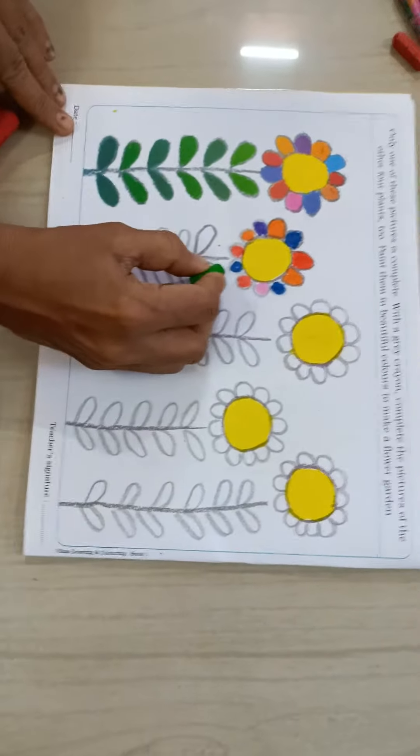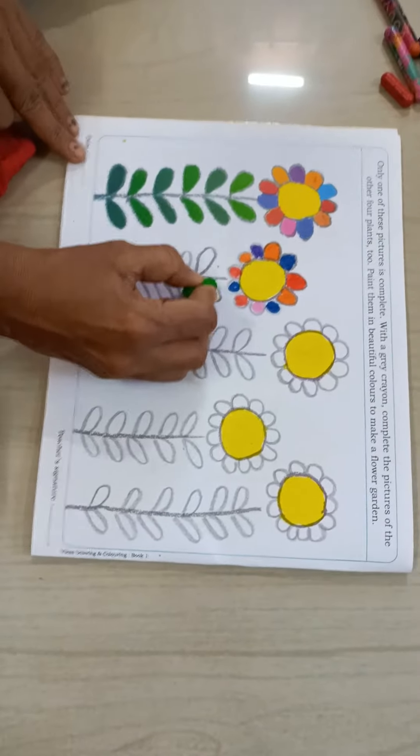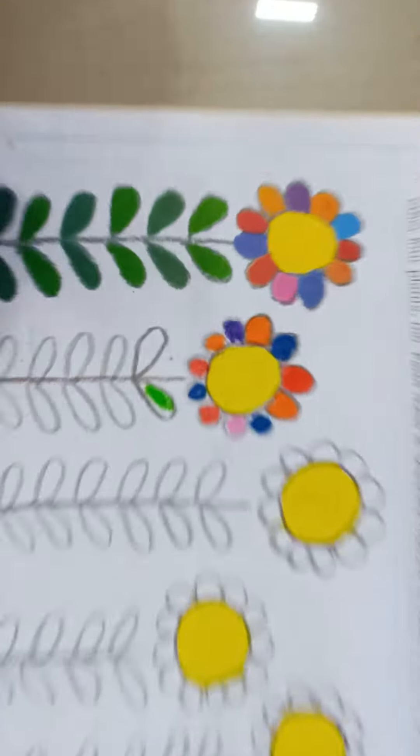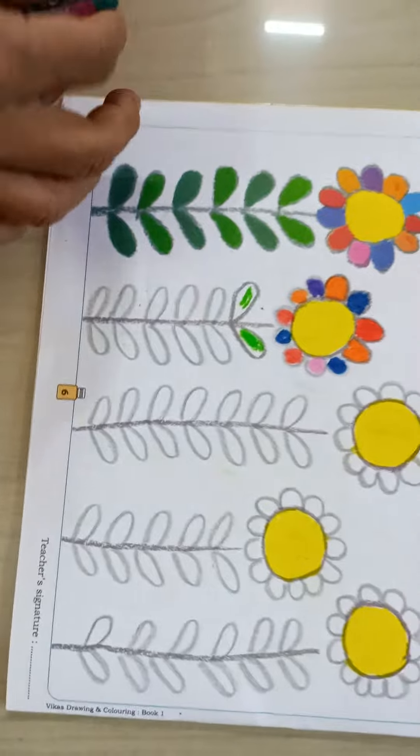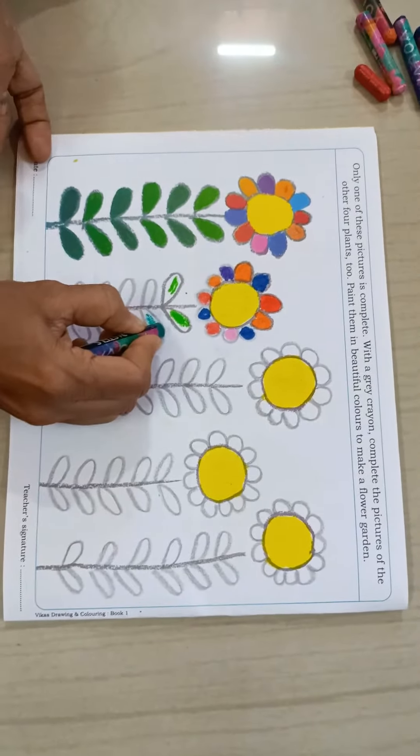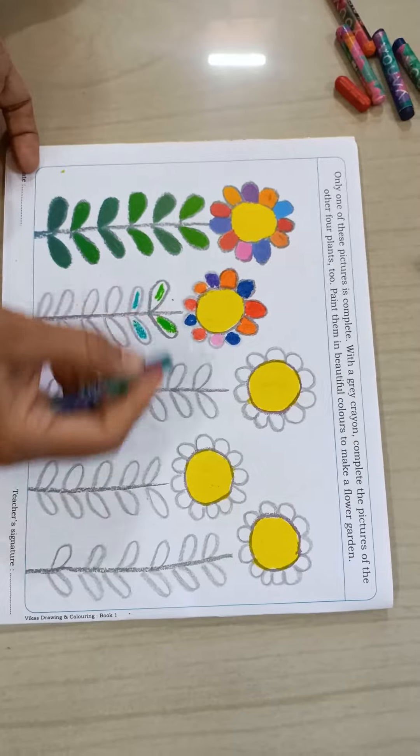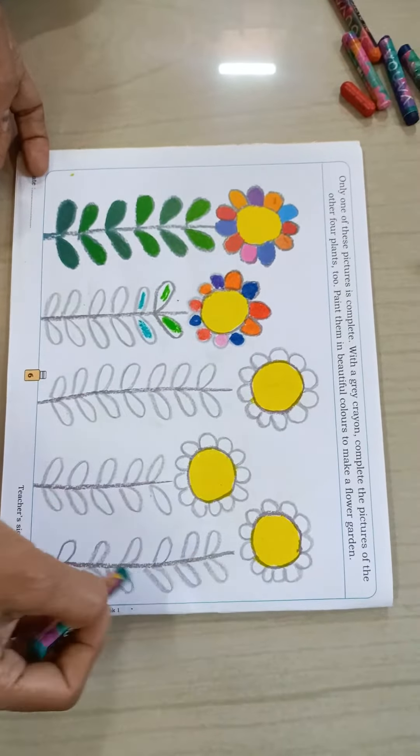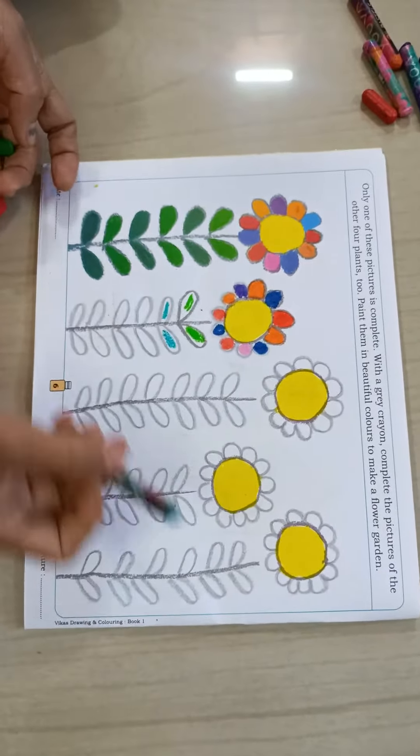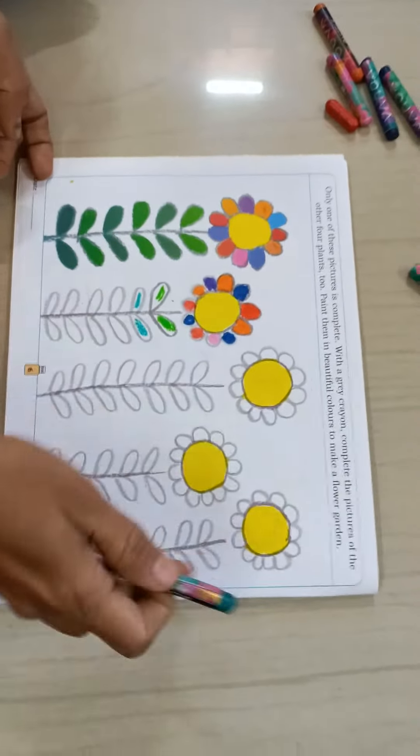Now we have to draw blue color here. Now we have to give this light green color here and here, and then we have to give this dark green color here and here. And all these remaining flowers and these leaves we have to give color like this only.